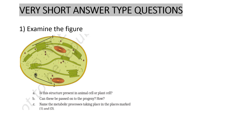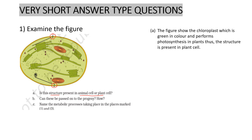They are given this question. They are asking: is this structure present in an animal cell or a plant cell? First of all, identify the figure. The figure is chloroplast, and photosynthesis occurs here. So this structure is present in the plant cell and not in the animal cell.